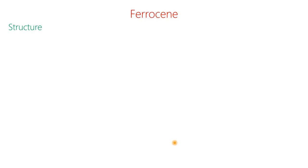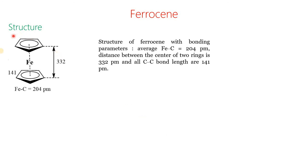Coming to the structure: you can see there are 2 CP rings and 1 iron center. The oxidation state of iron is 2+, the 2 CP rings are negatively charged, and the iron is positively charged — 2 minus on the two CP rings and 2 plus on the iron center. The average distance of carbon from the iron is 204 picometers, and the distance between the centers of the 2 rings is 332 picometers. All carbon-carbon distances are the same in both rings at 141 picometers, which indicates an aromatic character in the cyclopentadienyl ring.